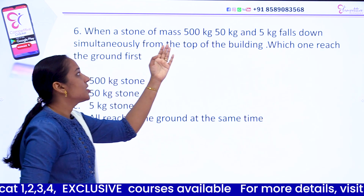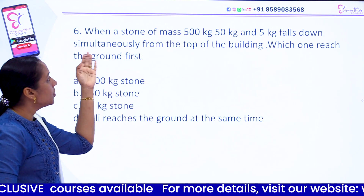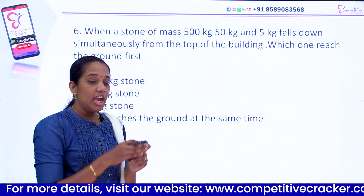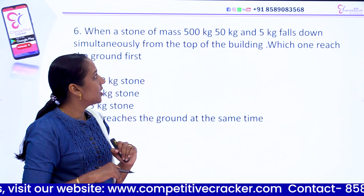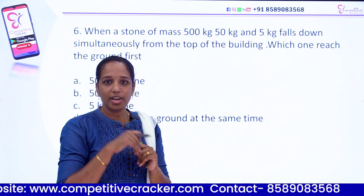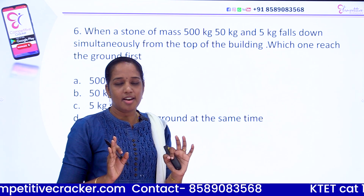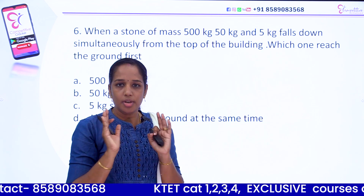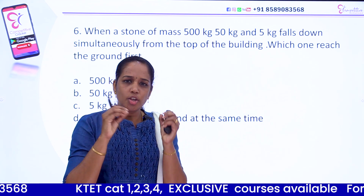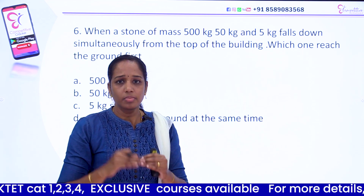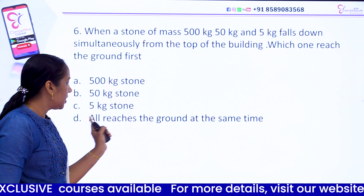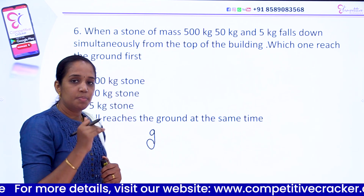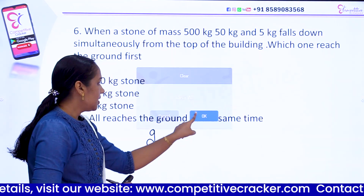Question number 6. A stone of mass 500 kg, 50 kg, and 5 kg falls down simultaneously from the top of a building — which one reaches the ground first? Since g is independent of the mass of the body, and neglecting air friction, all three objects reach the ground at the same time.